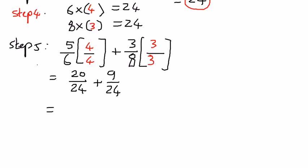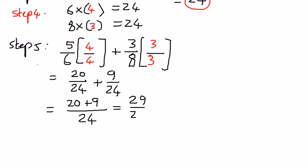We can write the common denominator as 24, and then add the numerator parts: 20 plus 9, which is going to be equal to 29 over 24. When the numerator part is greater than the denominator part, this is an improper fraction.